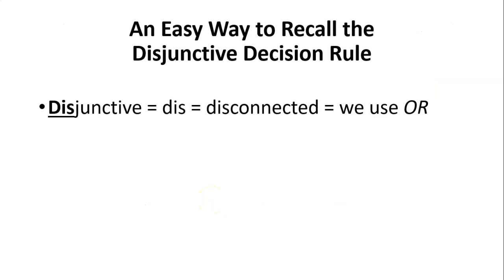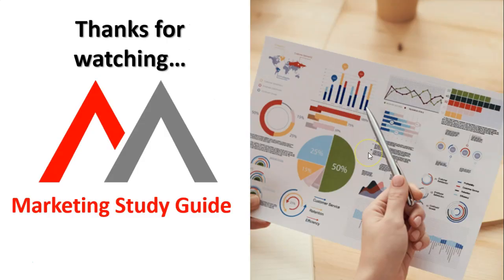An easy way to recall the term disjunctive is to use the word 'dish' at the start and turn it into 'disconnected,' which means the attributes are not interrelated — we're after one attribute, there's no connection between them. It could be that one, or it could be that one, or it could be that one. Hopefully that helps you remember. There are other videos to have a look at covering the various decision rules in consumer behavior.